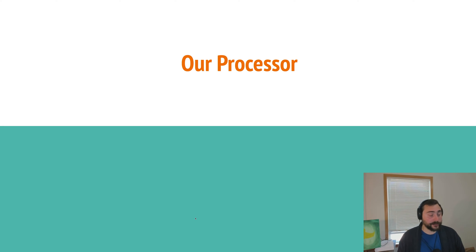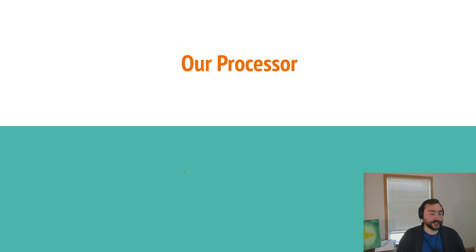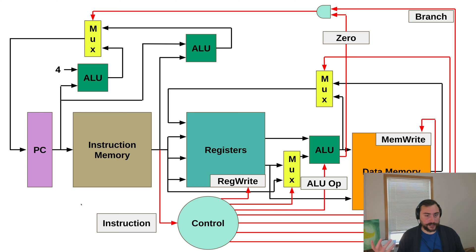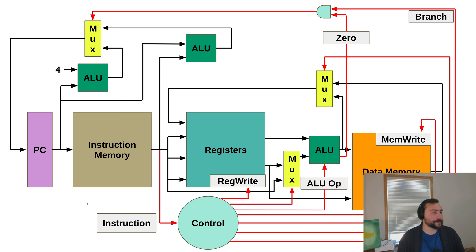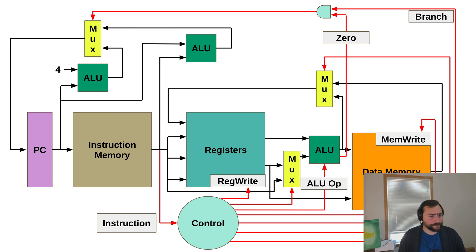In the last video, we looked at a simple processor that implements a subset of the RISC-V instruction set. As a reminder, here's our very simple block diagram — somewhat simplified compared to supporting the full instruction set, but as you can see, it's fairly complicated. There are signals going all over the place that change depending on which instruction we're going to execute. Today we're going to look at the instructions we support and trace them as they execute through each of these blocks.